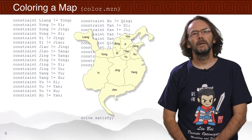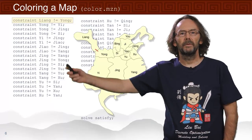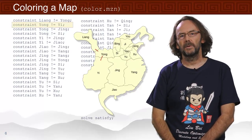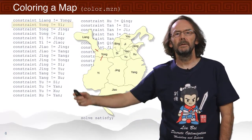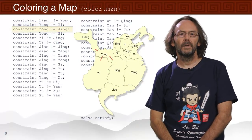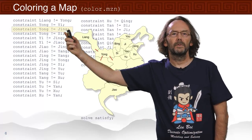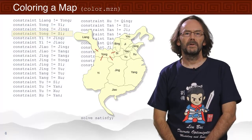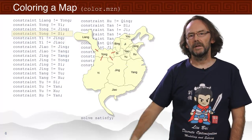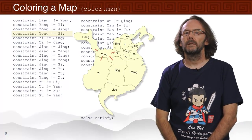Let's look at a few of the constraints. Province Yang is next to province Yong, so we write: Yang ≠ Yong. Province Yong is next to province Yi, so: Yong ≠ Yi. Province Yong is next to province Ying: Yong ≠ Ying. And province Yong is next to Su: Yong ≠ Su. We write down all the rest of these neighbour relationships between the different provinces.